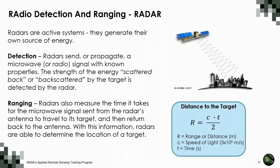Radars also range the target. They measure the time it takes a microwave signal sent from the antenna to travel to the earth and return. This is critical because it allows the radar to locate the target. The range or distance in meters or kilometers from the radar antenna to the target is a function of the speed of light and the two-way travel time of the signal — divided by two because it's a round trip.